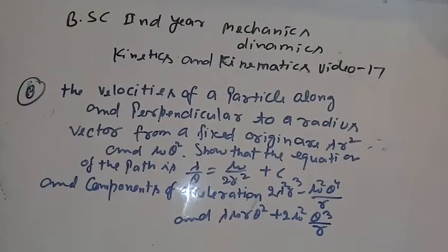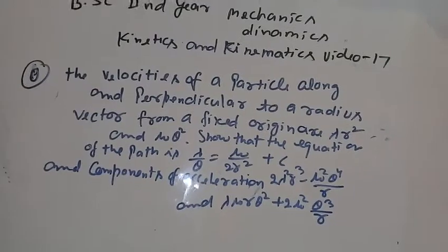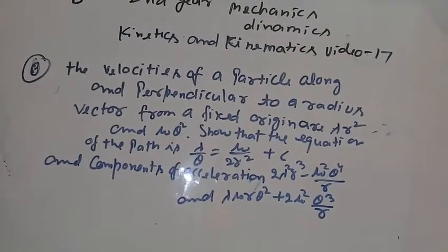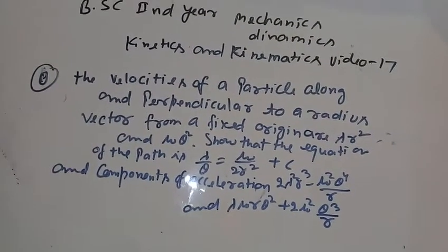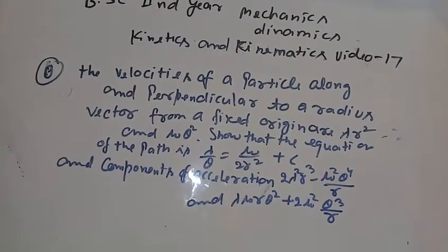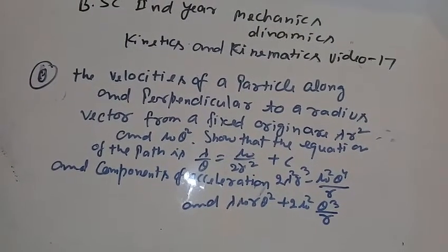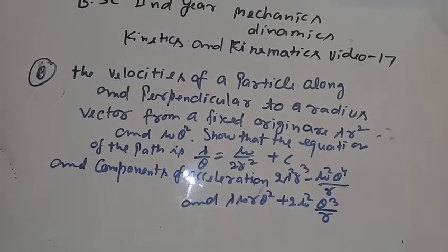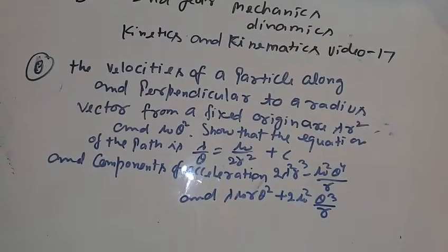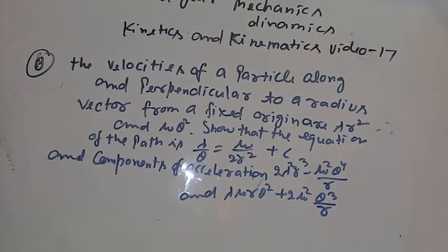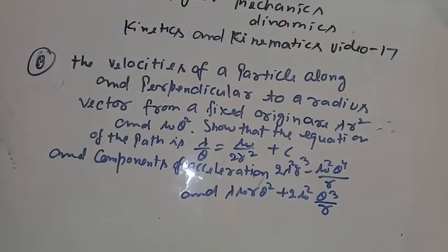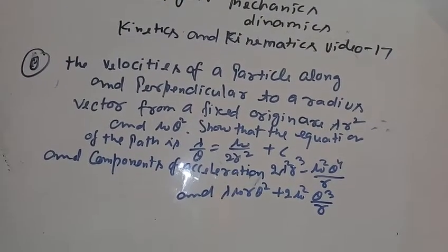This is a second year mathematics dynamics problem on kinematics. The question is: the velocity of a particle along and perpendicular to the radius vector from a fixed origin are lambda r squared and mu theta squared, so that the equation of the path is lambda by theta equal to mu upon 2r squared plus c.